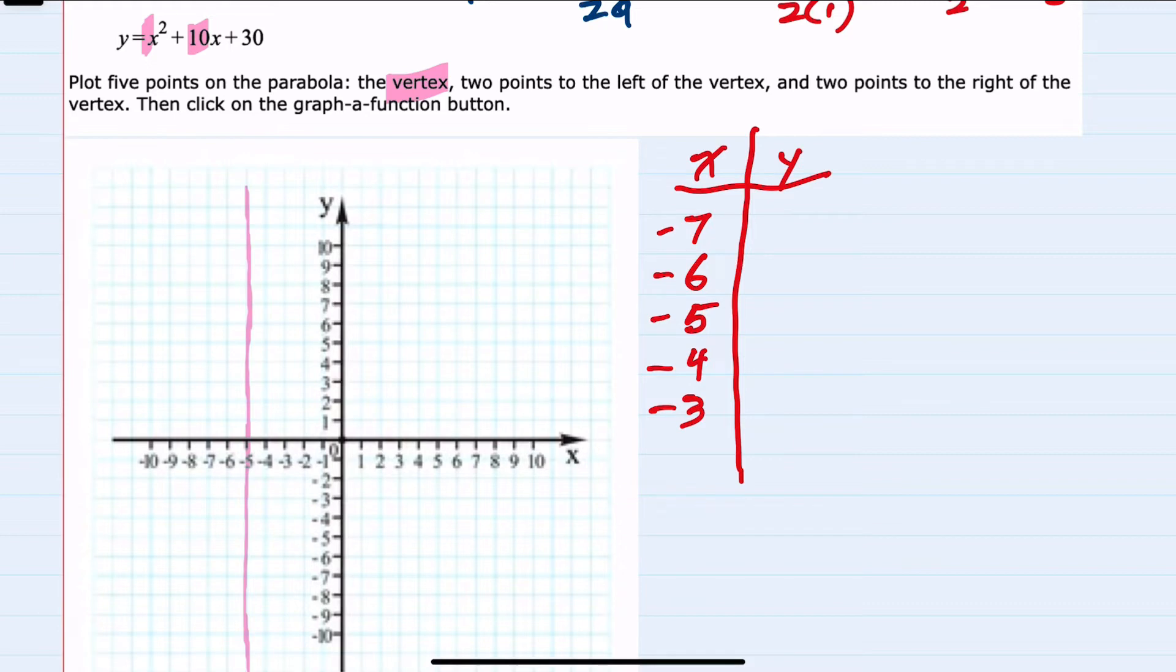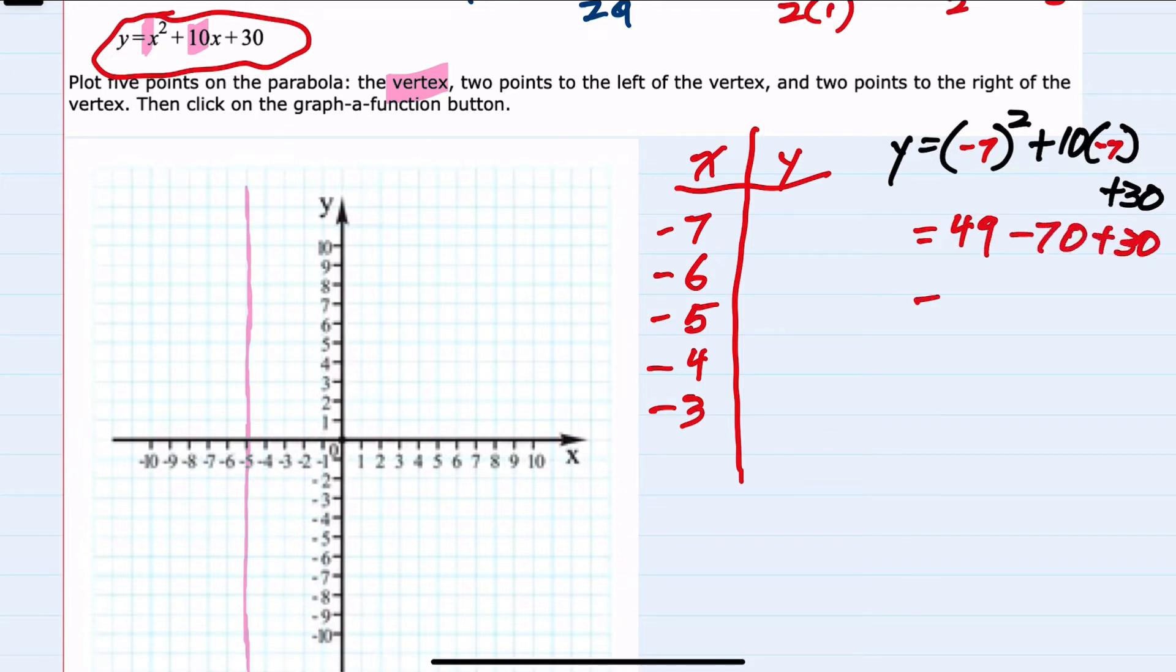So now I will turn my attention back to the equation for the parabola and begin my substitution. Plugging that first value, negative 7, back into our parabola, we would replace the x's with negative 7. To find our y value, this would give us negative 7 squared is 49, 10 times negative 7, minus 70, plus 30. Simplifying here, 49 minus 70, minus 21, plus 30, or 9. So we have our first coordinate, negative 7, 9.